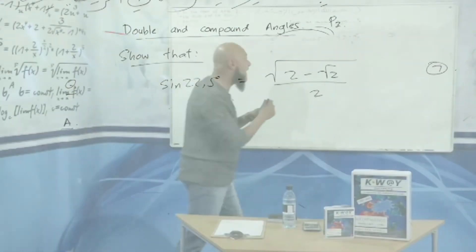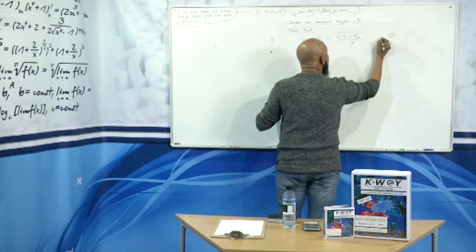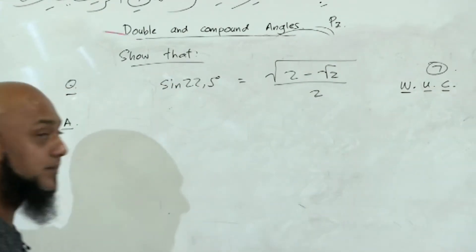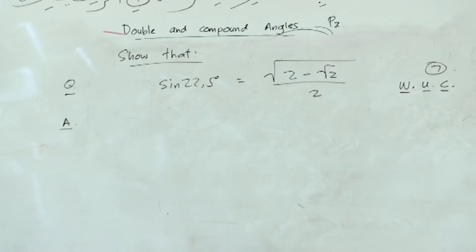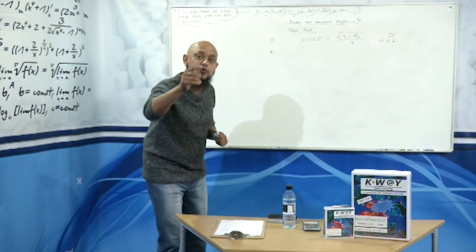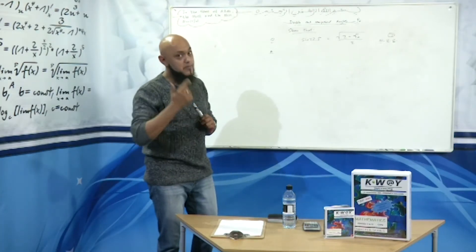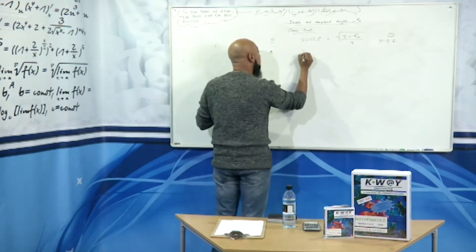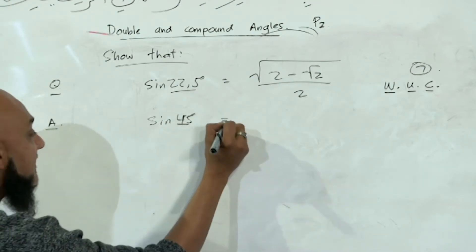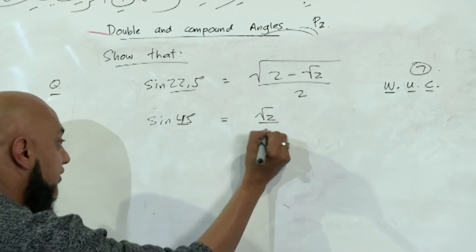We know — without the use of a calculator, obviously — because they want that. Remember, when they say W.U.C., it means without the use of a calculator. Now, many of you would go and say: I know that sin(45°), because 22.5° and 45° are related — 22.5° is half of 45°. So you'd say sin(45°) is equal to, as a special angle, root 2 over 2.